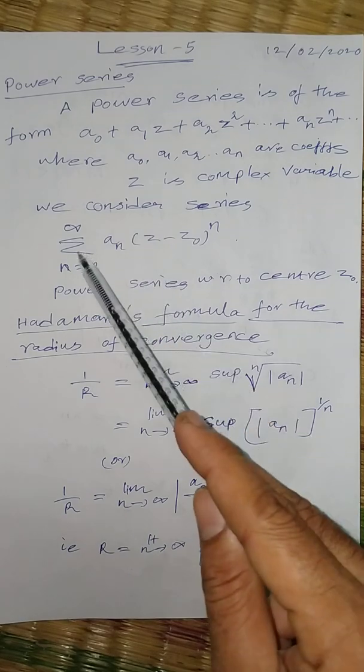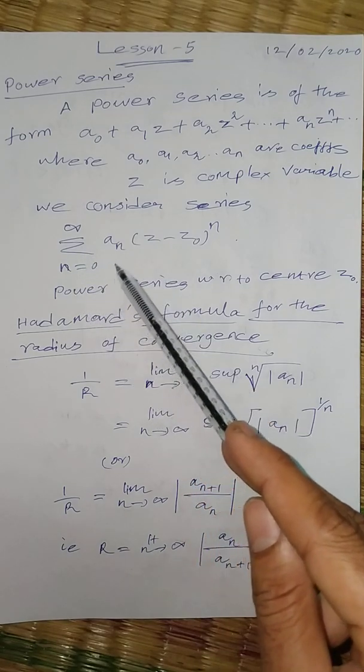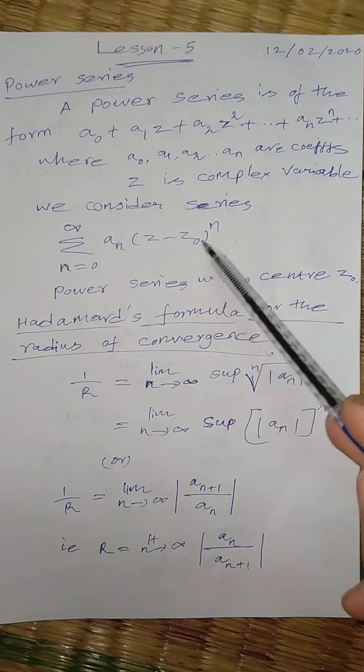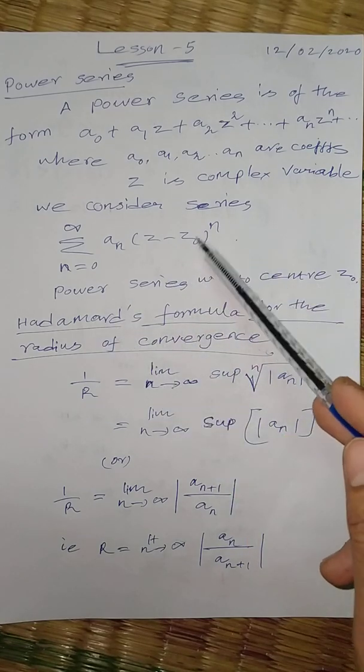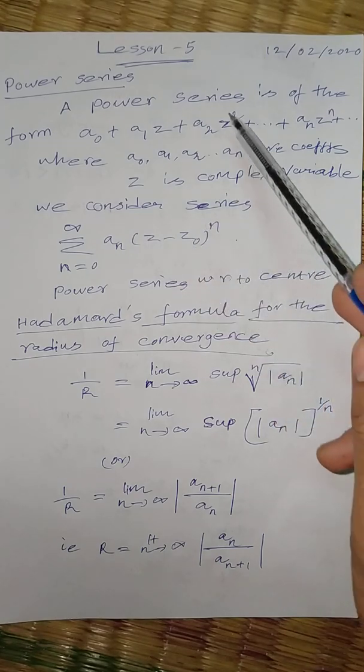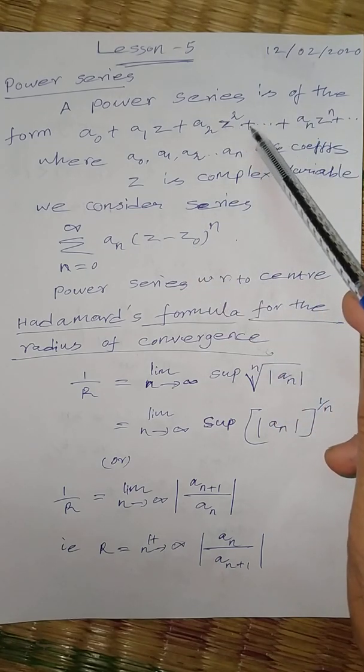We consider the series summation n equal to 0 to infinity an times z minus z0 power n. Here the center is z0. What about here? We know very well the center is 0.